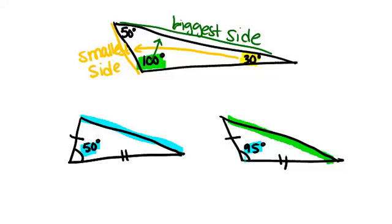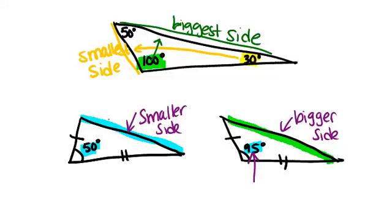So because we already had two pairs of congruent sides, whichever angle was bigger, which was the 95, would give us the bigger of the two third sides. So this is the bigger side, this is the smaller side, if we're comparing these two side lengths.